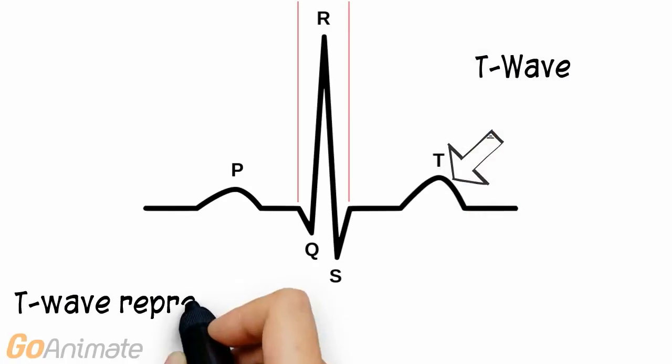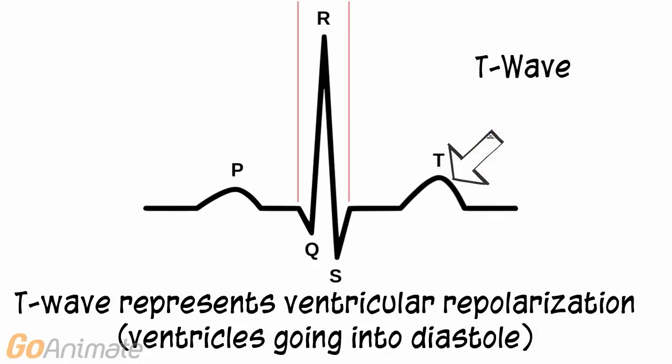The T wave represents ventricular repolarization. At this point, the ventricles are going into diastole.